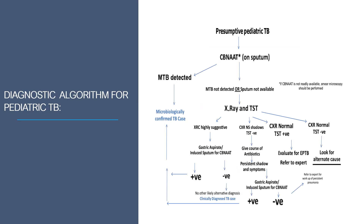For presumptive pediatric tuberculosis, if NAAT is done and MTB is detected, it is called microbiologically confirmed tuberculosis. If MTB is not detected, chest X-ray and tuberculin skin test are used. If chest X-ray is highly suggestive, gastric aspirate is done; if positive, microbiologically confirmed TB; if negative, consider alternative diagnosis. If chest X-ray shows some signs but TST is negative, give a course of antibiotics. If chest X-ray is normal and TST is positive, evaluate for extrapulmonary tuberculosis. If chest X-ray is normal and TST is negative, look for alternate diagnosis.